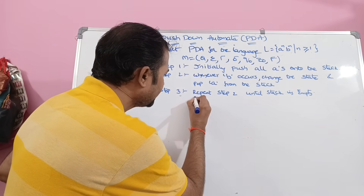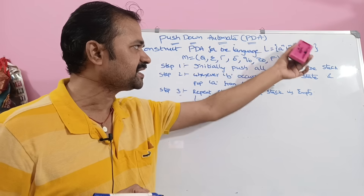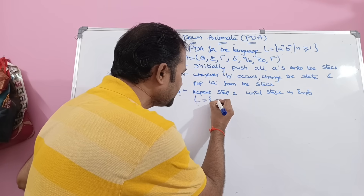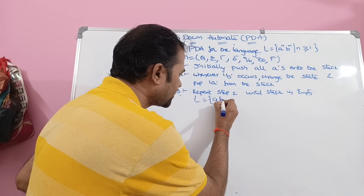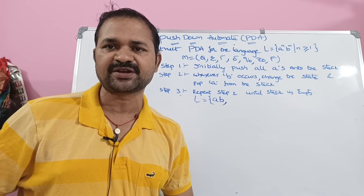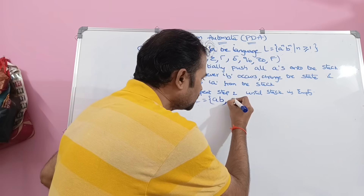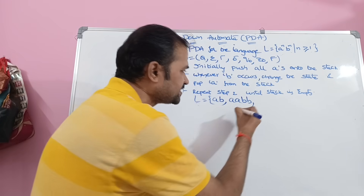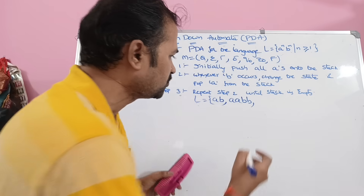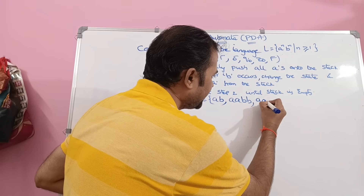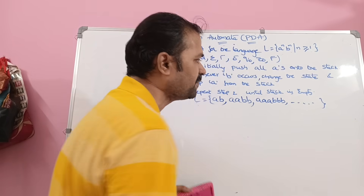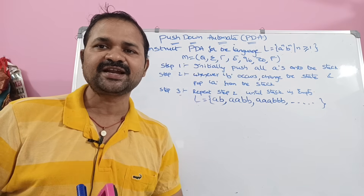First let us write the language L. Here N starts from 1. If N equals 1, then A power 1 B power 1, meaning single A and single B. Next N becomes 2, so A power 2 B power 2, meaning 2 A's and 2 B's. Next N becomes 3, so A power 3 B power 3, meaning 3 A's and 3 B's. Likewise we can have N number of strings.